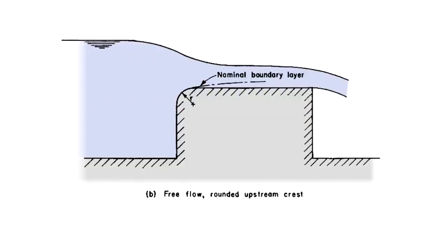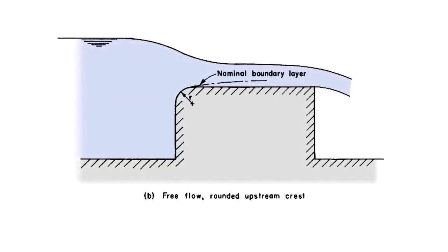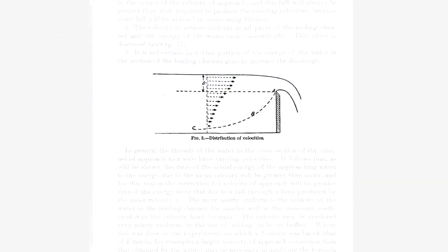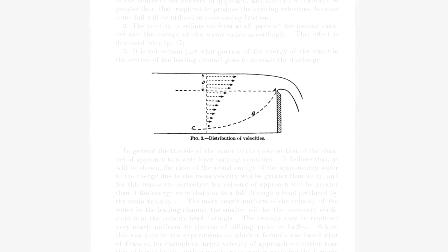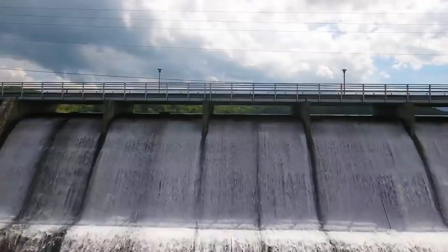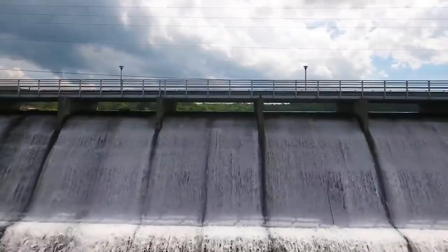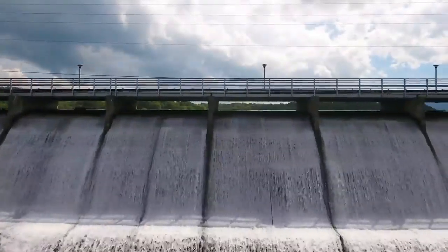Over time, the term weir has taken on a more general definition in engineering to apply to any hydraulic control structure that allows water to flow over its top, often called its crest. In fact, the spillways of many large dams use weirs as control structures.